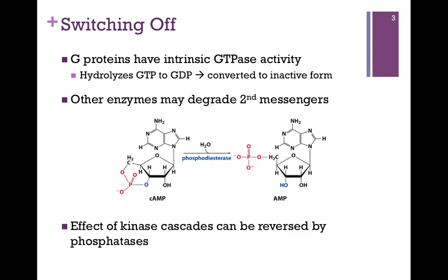The problem is we've already elevated the concentration of that second messenger, and we need to terminate that signal. There are enzymes like phosphodiesterase, as pictured here, that hydrolyze cyclic AMP. Here's the cyclic AMP structure on the left — there's an internal phosphate bond within that AMP molecule, and phosphodiesterase simply hydrolyzes that bond, giving us AMP. It's cyclic AMP that's our messenger, not AMP. By breaking that cyclic structure, we no longer have our second messenger and it can no longer communicate that message.